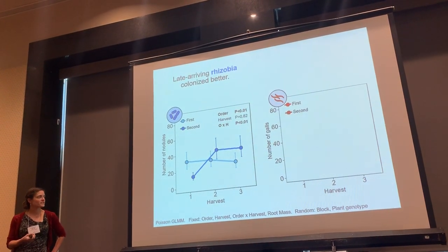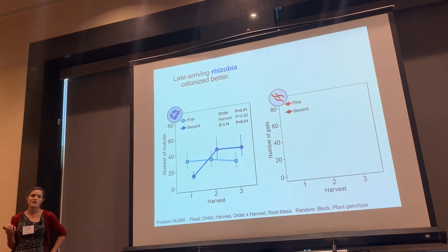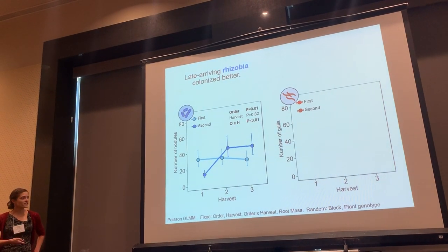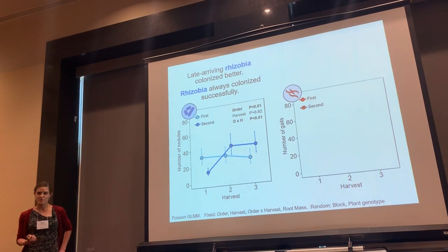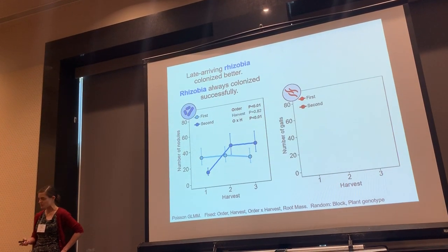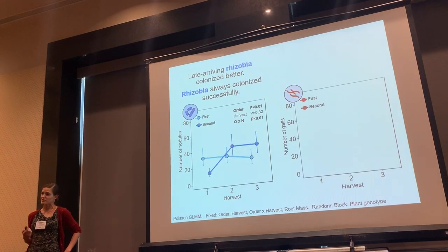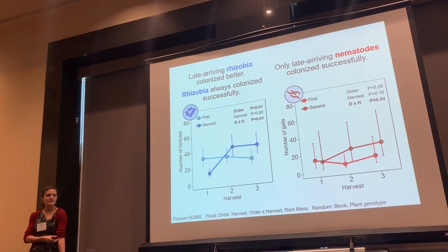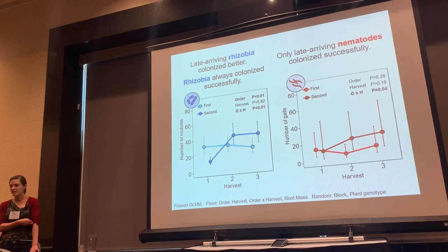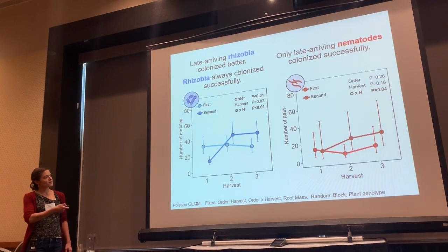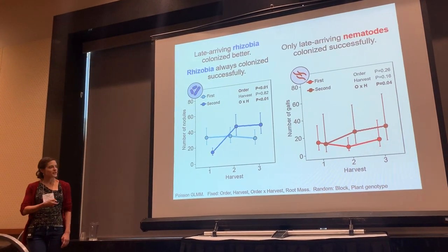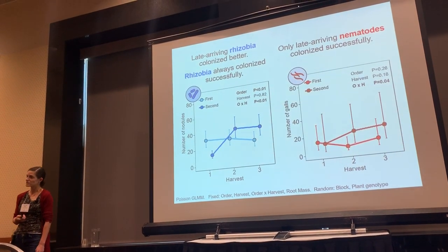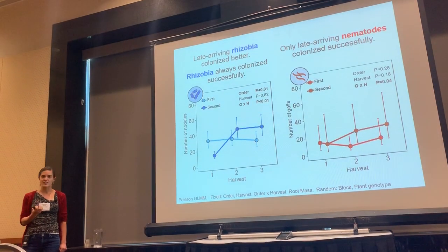These values are adjusted for root mass — you're looking at nodules and galls per gram of root to remove the confound of plant size. Notably, rhizobia always colonized successfully: all plants in our experiment formed nodules, and they all formed a substantial number. This is exactly what we would expect given that these are mutualists and the plant is promoting this association. With the parasites, we see a qualitatively similar pattern with some important differences. Parasites inoculated second also colonized better, but early-inoculated parasites were largely unsuccessful — when we inoculated plants with parasites early, we saw very low infection overall.